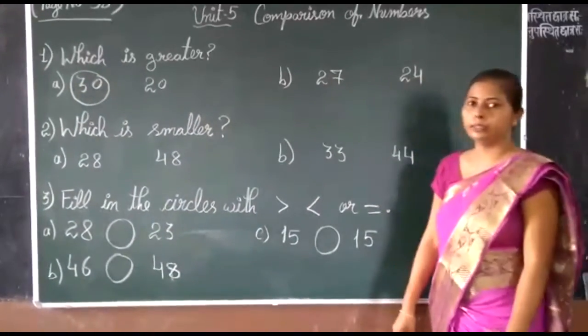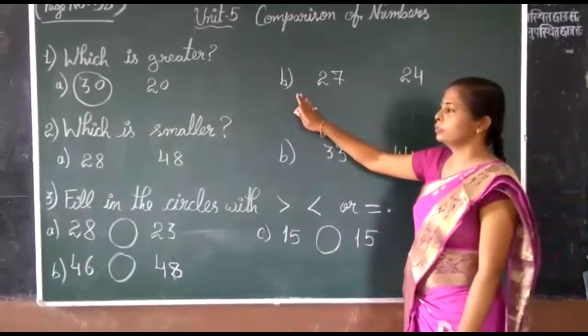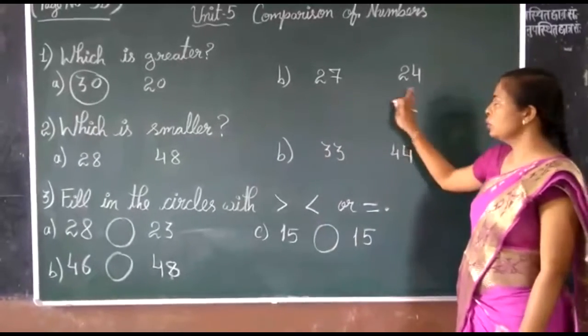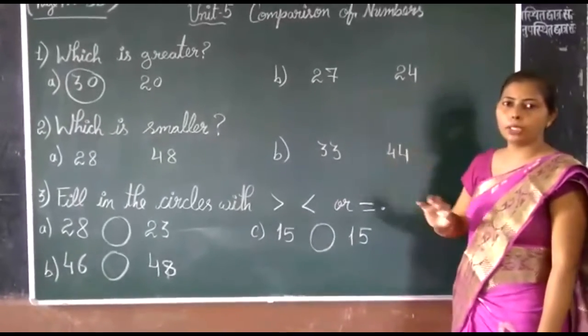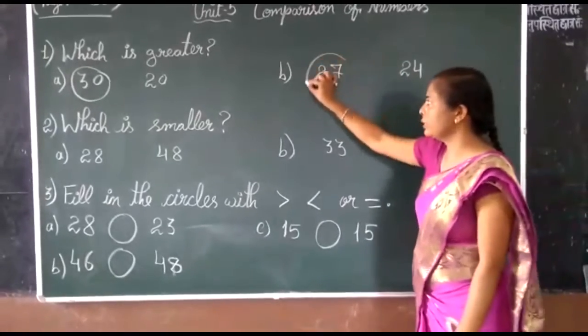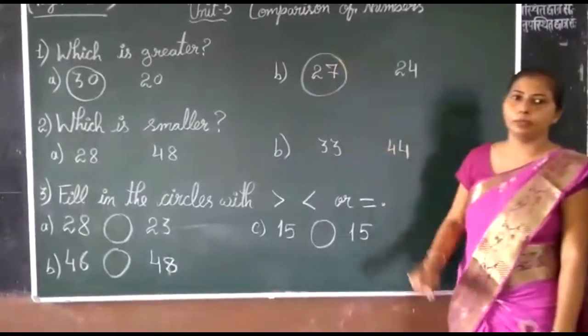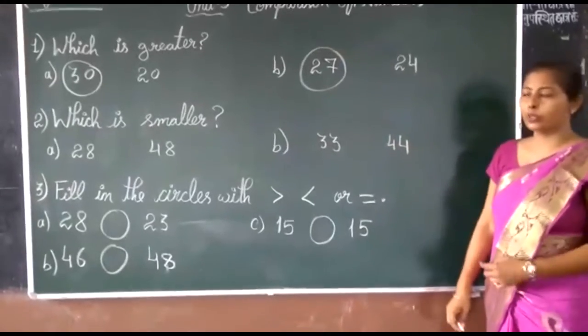Circle the 30. Now the next, here are also two numbers. Which is the greatest number? Number 27 is the greatest number.